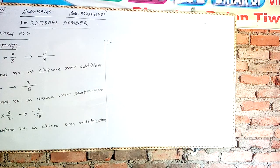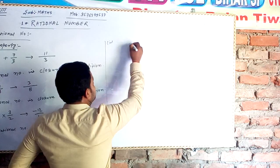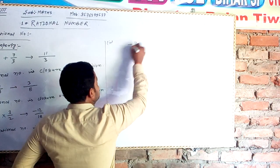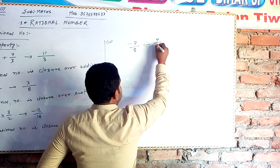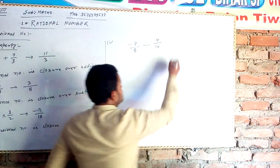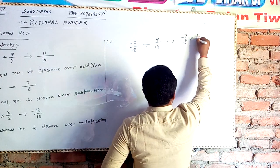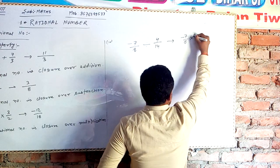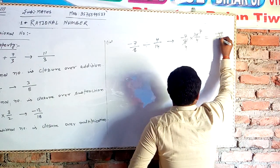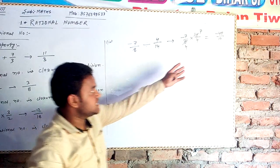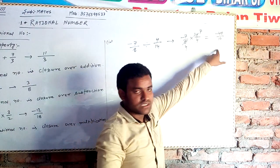Next, closure property over division. For example, minus 7 by 8 divided by 4 by 14. The result is minus 7 by 8 multiplied by 14 by 4, which gives minus 49 by 16. You can see that minus 49 by 16 is also a rational number. So the division of two rational numbers is also a rational number, and rational numbers show closure property over division as well.